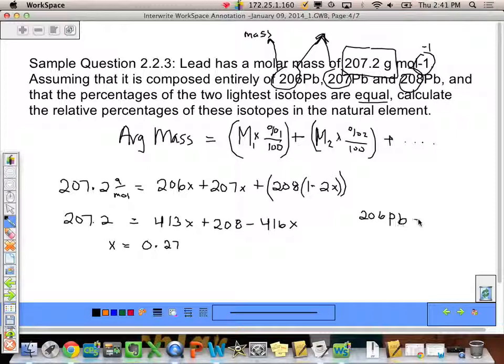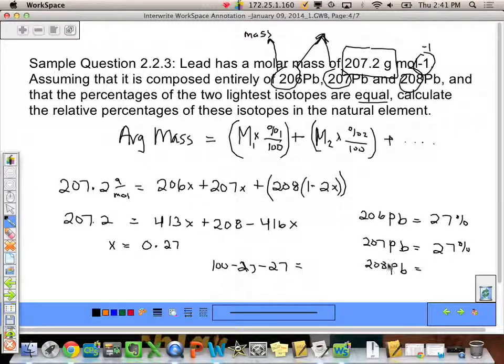So 206Pb has a relative abundance of 27%, and the 207Pb has a relative abundance of 27%. My 208Pb is going to be equal to 100 minus 27, minus 27, and that gives me a grand total of 46%. I did that because I know that overall my percentage has to equal 100%. So those are my percentages.